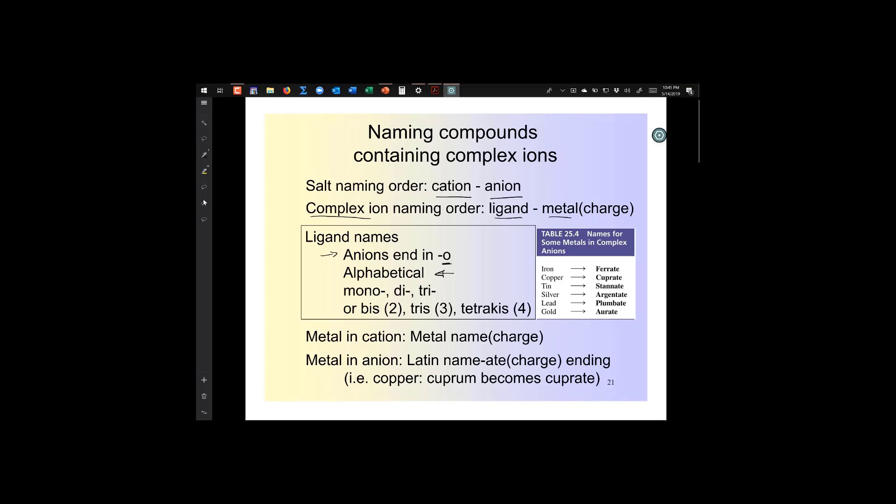When you have multiple ligands, you'll have to use prefixes like mono, di, tri, tetra. Now, some ligands actually have di in the name like ethylenediamine. When you have two ethylenediamine molecules as ligands, you'd have to say bis for two to avoid confusion. The metal in the cation just gets the metal name. But if the metal is in an anion, then it would be ferrate because it would have a negative charge.